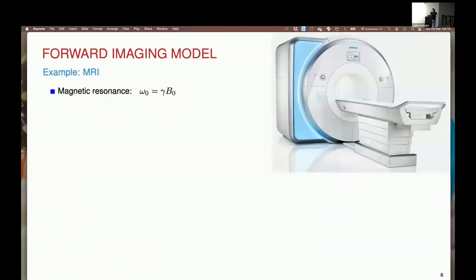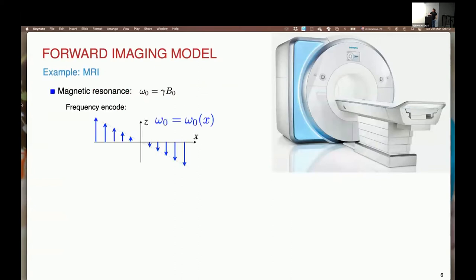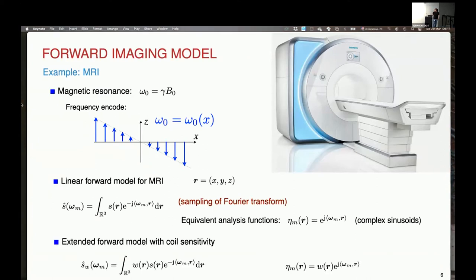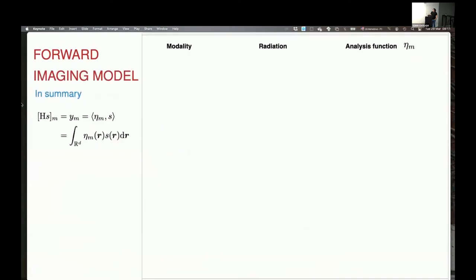As an example of MRI — without pretending to fully explain it — you can see it as one of these linear devices whose analysis functions equal the complex sinusoids. That is what the physics boil down to. You can even extend this model with coil sensitivity by simply adding a weight function to the analysis function that characterizes the sensitivity of the coils.